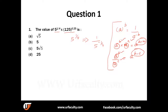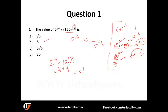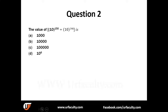Now moving on to the first question: five to the power of one-by-four multiplied by 125 to the power of 0.25 — and 0.25 is again one-by-four. Now, 125 can be written as five to the power of three, so we get five to the power of one-by-four multiplied by five-cubed to the power of one-by-four. The power becomes one-by-four plus three-by-four, which equals one. So the answer is five to the power of one, which is 5.